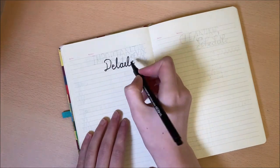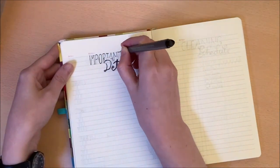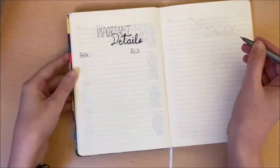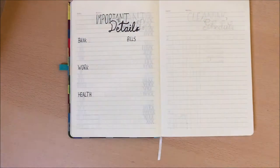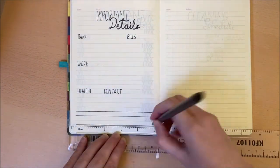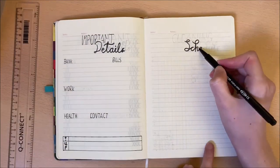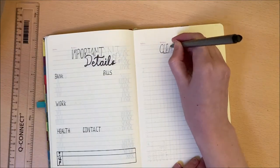Next it is on to my important details page. This is just a single page to jot down the most important things you need to remember, such as bank details, work, bills, health information, or emergency contact numbers. I've also added a few small boxes down the bottom of the page to include passwords and user names to log into important sites.